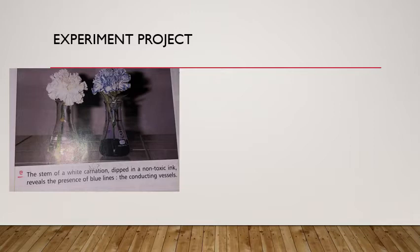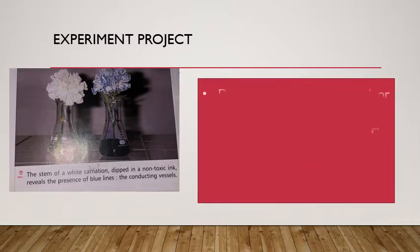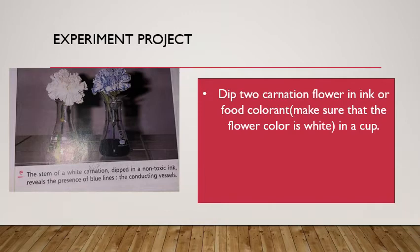As you can see in the picture, we have the stem of a white carnation dipped in non-toxic ink, which reveals the presence of blue lines — the conducting vessels. You are going to conduct this experiment by first dipping two white carnation flowers in ink or any food colorant. Make sure the flower color is white.